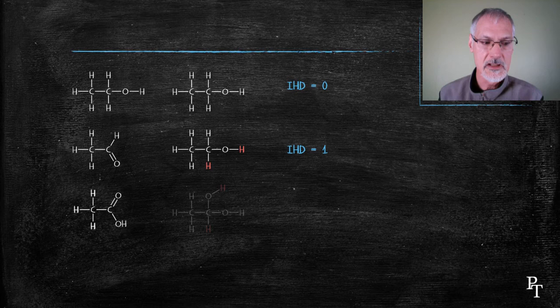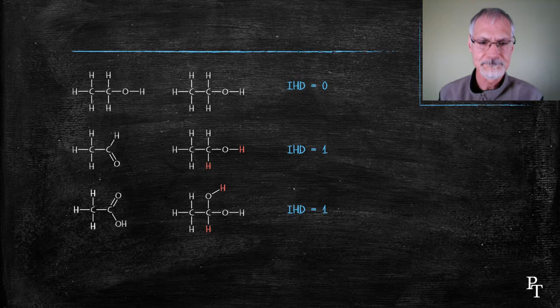Ethanoic acid or acetic acid, again, I would have to break the doubly bonded oxygen and add hydrogens to both the oxygen and the carbon, and its IHD would also be one.